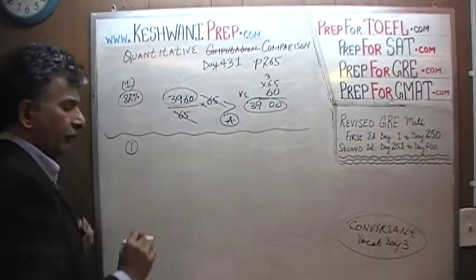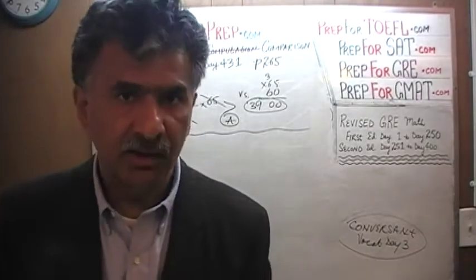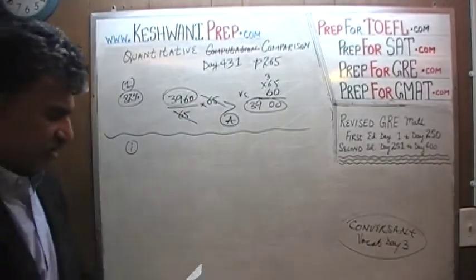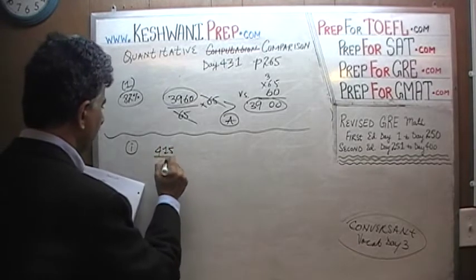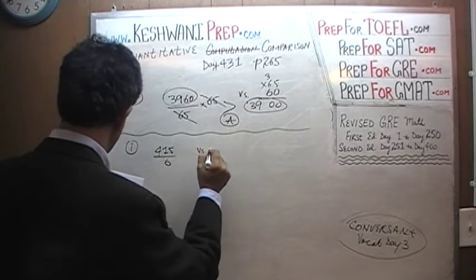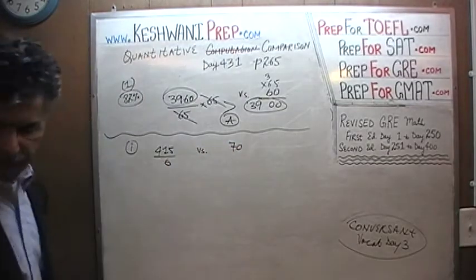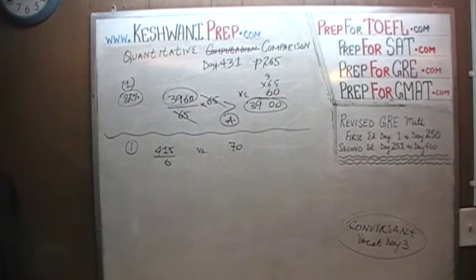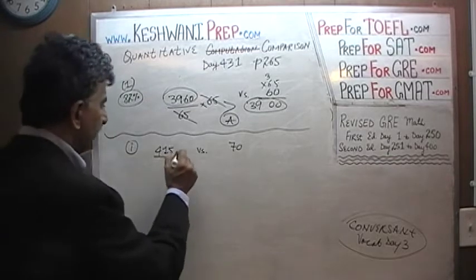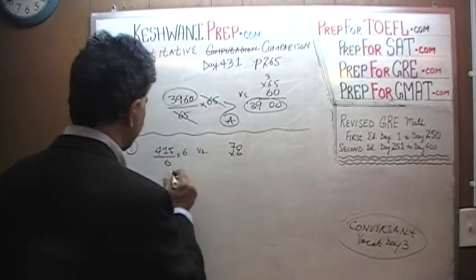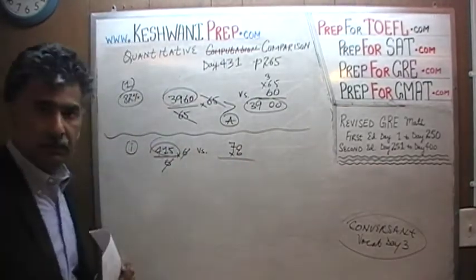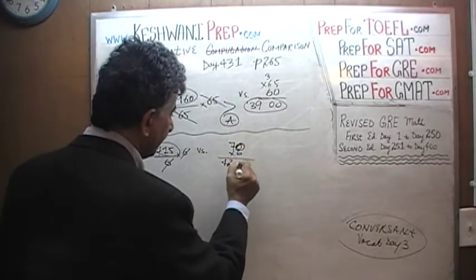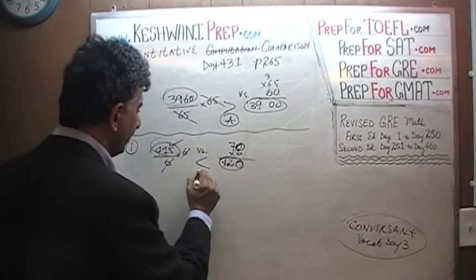Let's do one more. I'm going to give you five bonus problems — each time, do it yourself first, pause it immediately. Next one: 460 divided by 6 versus 70. As you can see, there is nothing to it. Multiply both columns by 6 — the 6 drops out. We have 460 here, and here we have 70 times 6: 7 times 6 is 42, with a zero at the end, so it's 420. 420 versus 460 — wait, 420 is bigger. The answer is B.